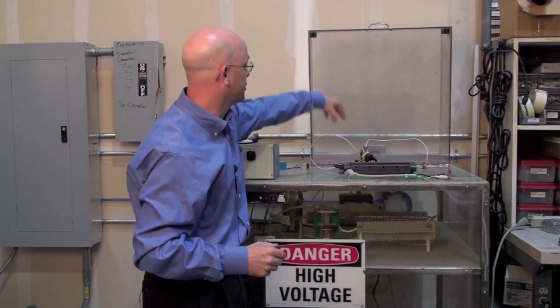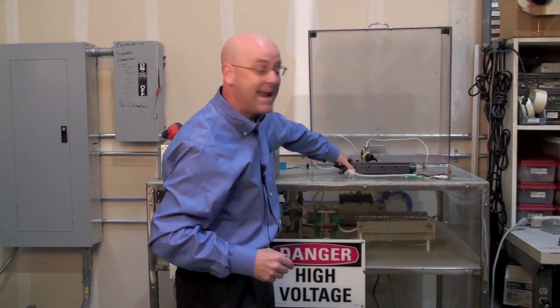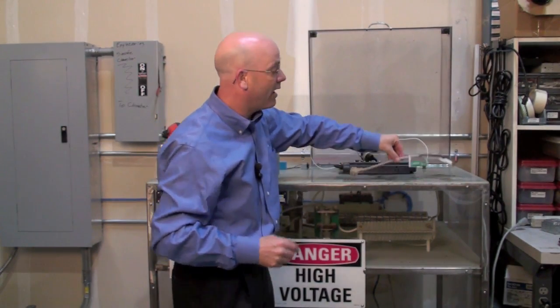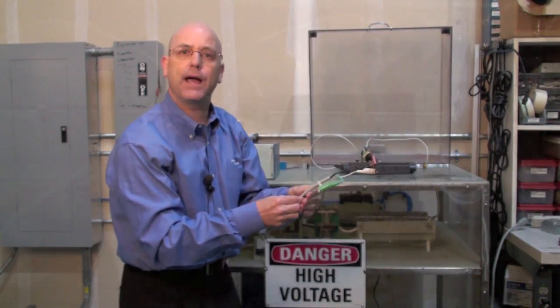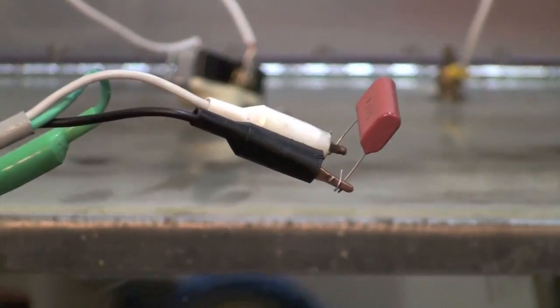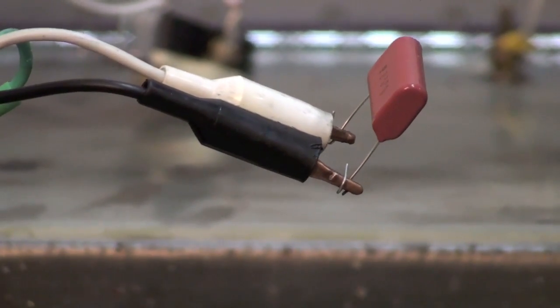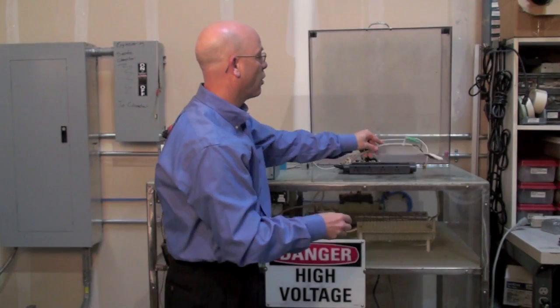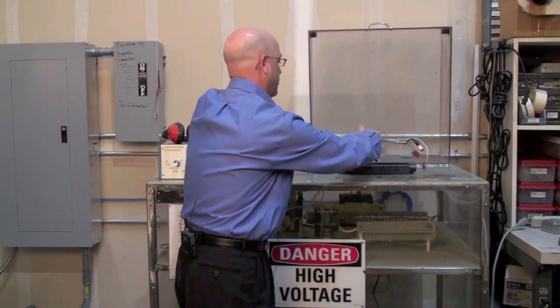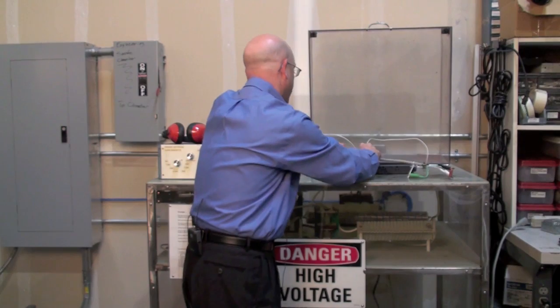What we have here is in the surge generator, the M8 plugged into it. We've got now a capacitor. This capacitor is found in many power supplies in plasma displays and a lot of common electronics as well. So we're going to show how this reacts to a near lightning strike when plugged into a Panamax product.